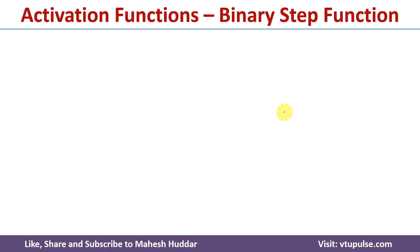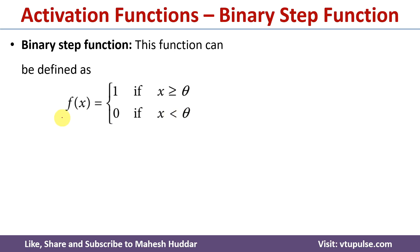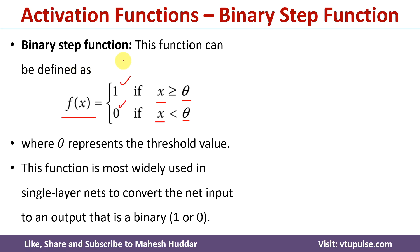The second activation function is the binary step function. Binary step function is defined as: f(x) = 1 for all x greater than or equal to theta, where x is the calculated net input and theta is some threshold value. If the calculated input is greater than or equal to the threshold, f(x) equals 1. The output is equal to 0 if the calculated net input is less than the threshold value. It is most widely used in single layer neural networks, where we are expecting two results — either 0 or 1.